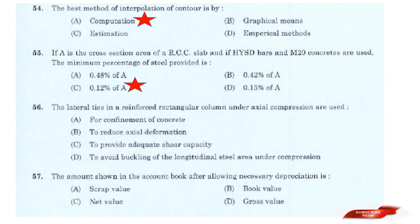Question: The lateral ties in the reinforced rectangular column under axial compression are used for? Options: Confinement of concrete to reduce axial deformation; To provide adequate shear capacity; To avoid buckling of longitudinal steel under compression. Answer: Option D.